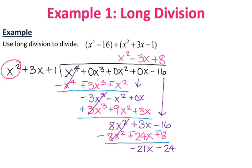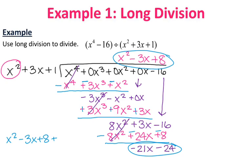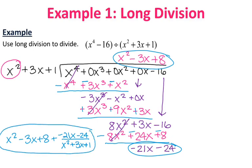Here is the final answer. I take what's written on top — x squared minus 3x plus 8 — and add the remainder as a fraction over what I divided by. So the final answer is x squared minus 3x plus 8 plus (negative 21x minus 24) over (x squared plus 3x plus 1).